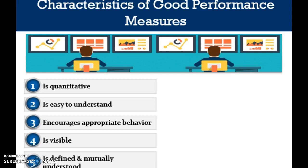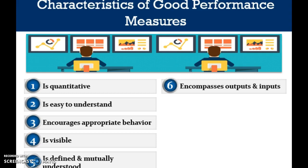The question of 'is it easy to understand?' and the question of 'is it defined and mutually understood?' are quite directly related. The sixth question to be asked is: does the metric encompass both outputs and inputs? Process metrics such as on-time delivery need to incorporate causes and effects into their calculation and evaluation.